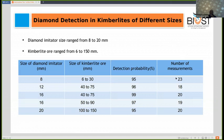This table shows results obtained from irradiating kimberlite of different sizes, ranging from 6 millimeters to 150 millimeters, containing diamond imitators ranging from 8 millimeters to 20 millimeters. The minimal diamond imitator was 8 millimeters, and the probability of detecting it was found to be 95 percent.